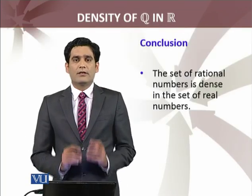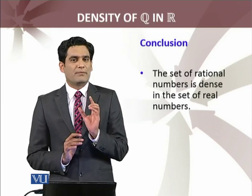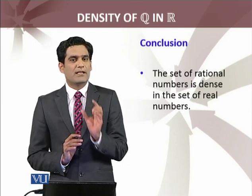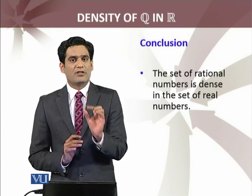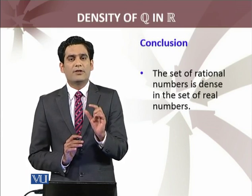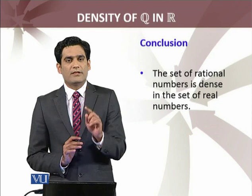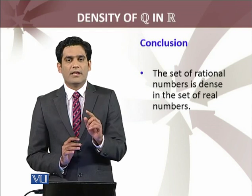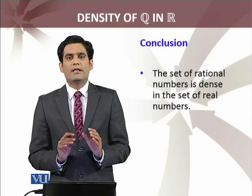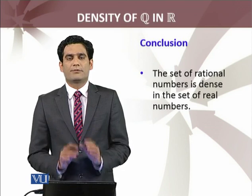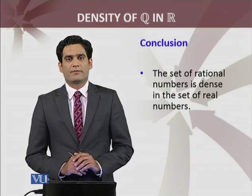The conclusion is: between every two real numbers, I have proved that there is a rational number. Therefore, the set of rational numbers is dense in the set of real numbers. Indeed, there are infinitely many rational numbers between any two real numbers.